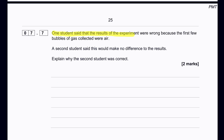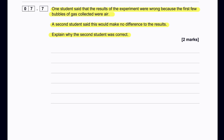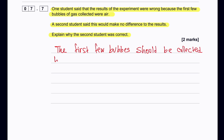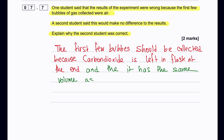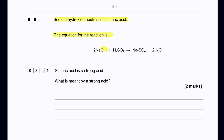One student says results were wrong because the first few bubbles collected were air; a second student says this would not make a significant difference. The second student is correct because the CO₂ produced in the flask first displaces the air already present. Whatever CO₂ displaces the air, the same volume of air enters the measuring cylinder. So the volume collected is the same — it won't be pure CO₂, but the volume result is still correct.